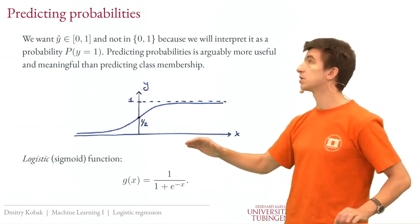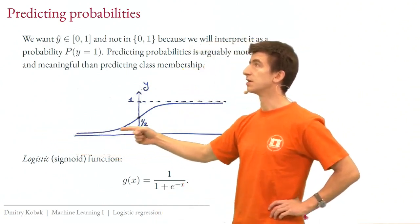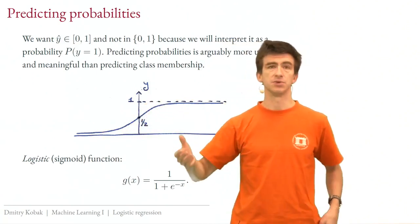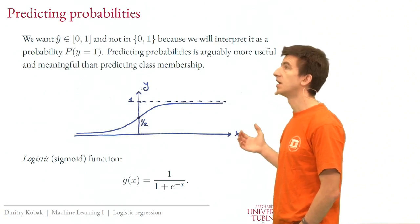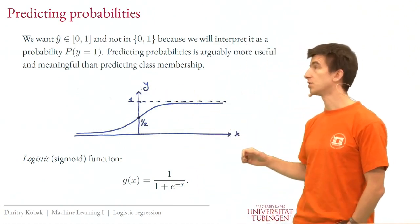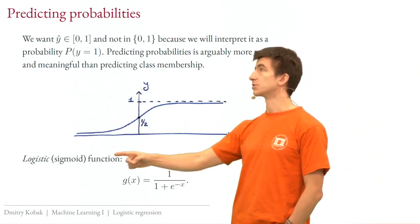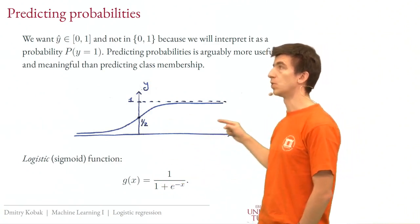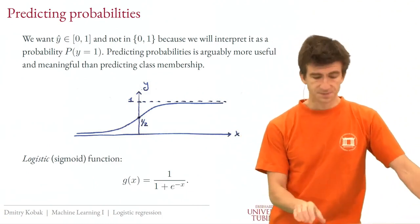So how do we achieve predictions between 0 and 1? We want some function that goes to 0 on one end and to 1 on the other end. It turns out there are many such functions, but a very convenient and common choice is the logistic function, which has a sigmoid form — also called the sigmoid function. When x goes to minus infinity this goes to 0, and when x goes to plus infinity this goes to 1. At 0 it's right in the middle at 0.5.